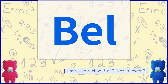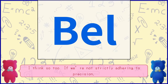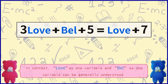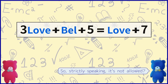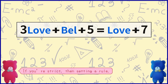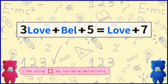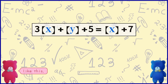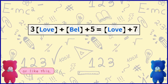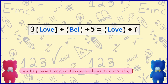Isn't that fine? Not allowed? I think so too, if we're not strictly adhering to precision. In context, 'love' as one variable and 'bel' as one variable can be generally understood. But strictly speaking, it's not allowed. If you're strict, then setting a rule like using parentheses with corners as variable delimiters — like this, or like this — would prevent any confusion with multiplication.